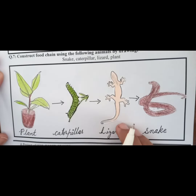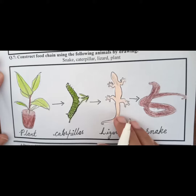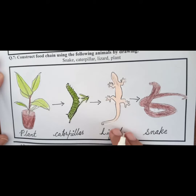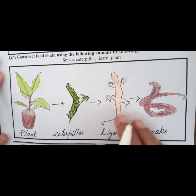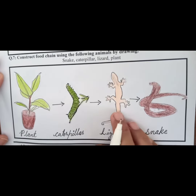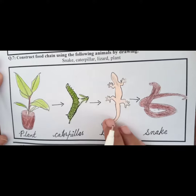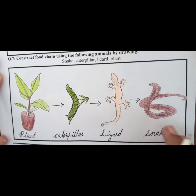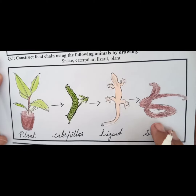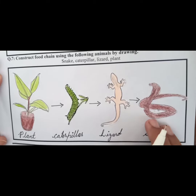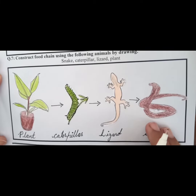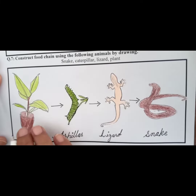After that, the caterpillar will be eaten by the lizard. The lizard is also a consumer, but here we have the secondary consumer. After that, we have the snake, which will eat the lizard. So the snake will be called the tertiary consumer.